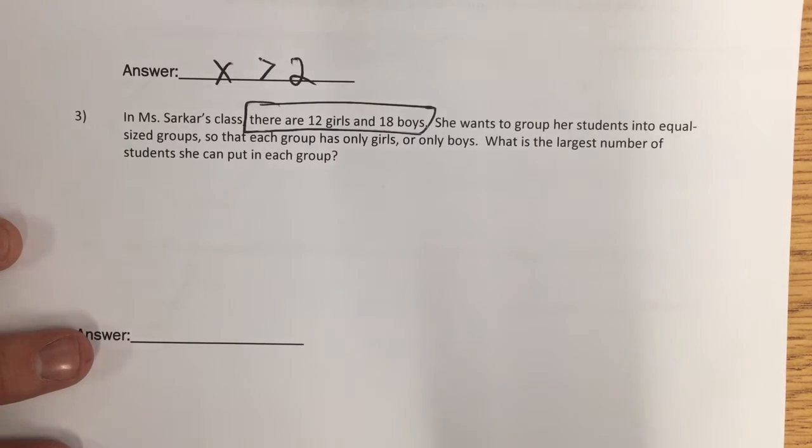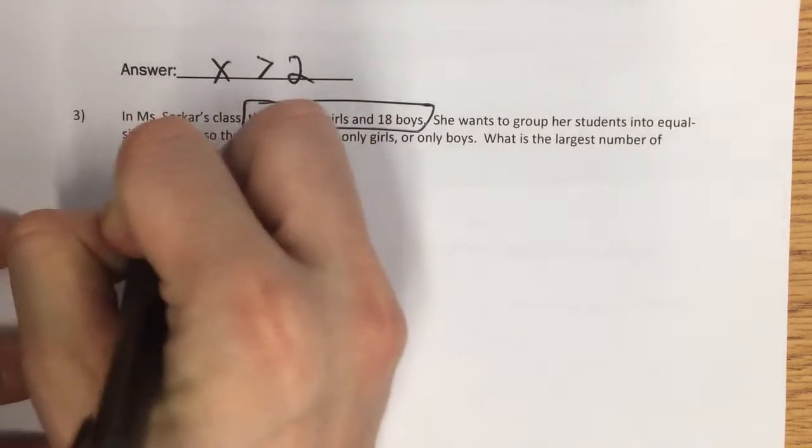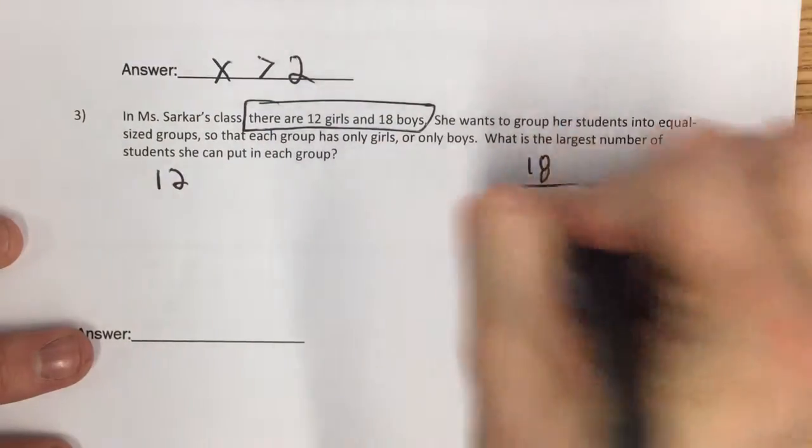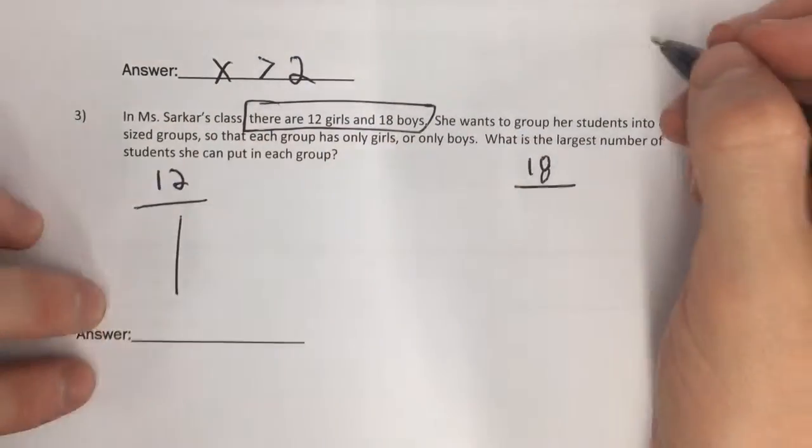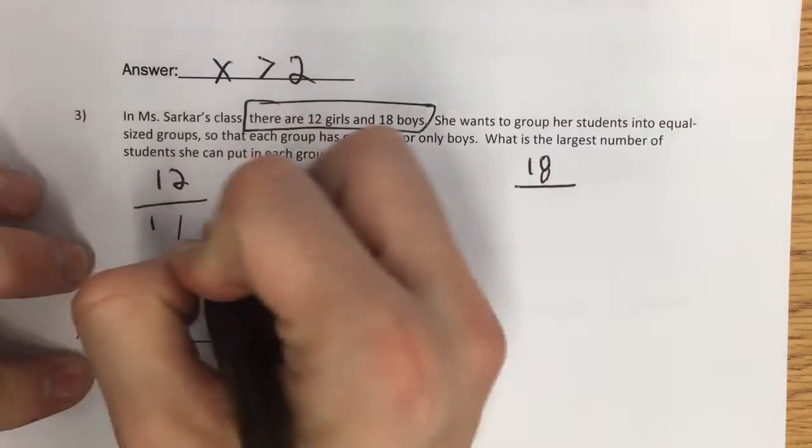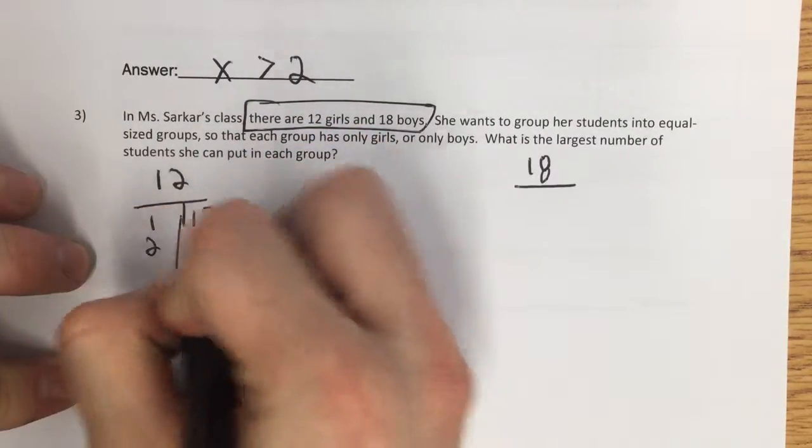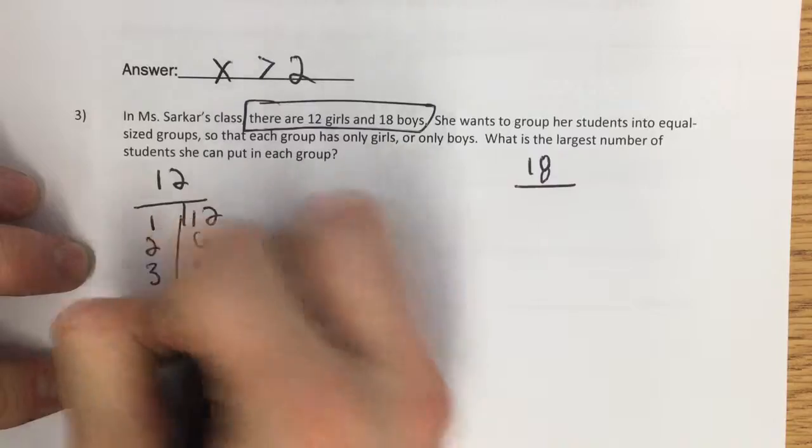So if I'm finding groups, let's see. If I have 12 girls and here's my 18 boys, possible group sizes for girls. I could do one group of 12, two groups of 6, or three groups of 4.